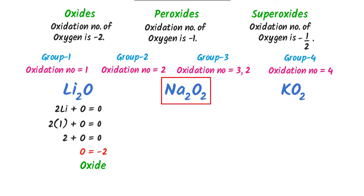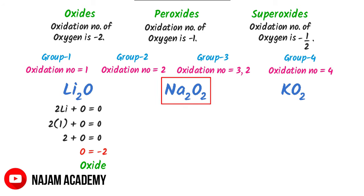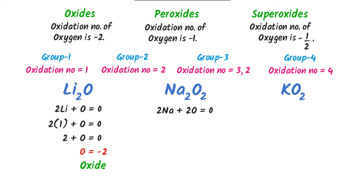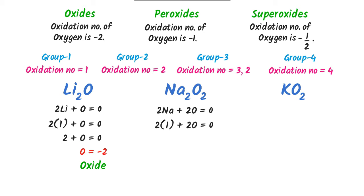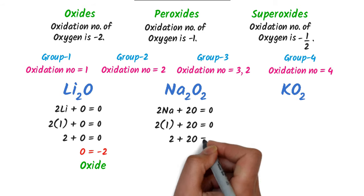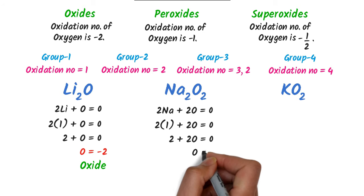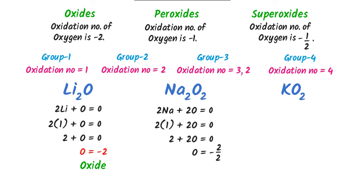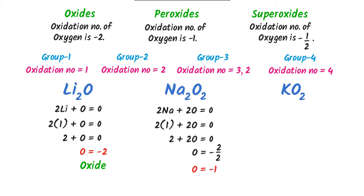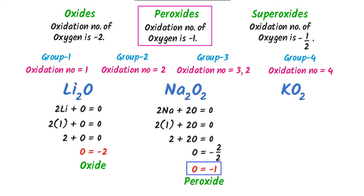Secondly, in this compound there are 2 atoms of sodium and 2 atoms of oxygen. I write: 2(sodium) + 2(oxygen) = 0, or 2 + 2(oxygen) = 0, so oxygen = −2/2 = −1. The oxidation state of oxygen is −1, thus this compound is peroxide.